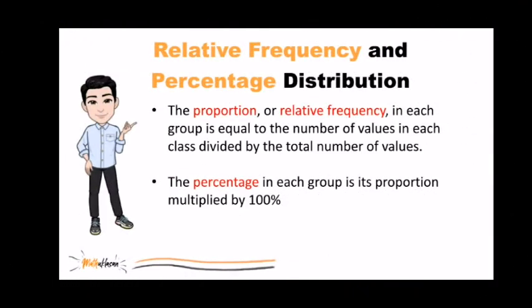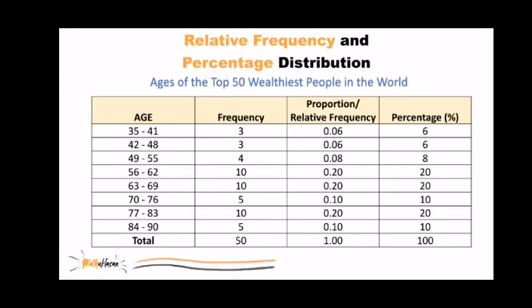Aside from frequency distribution, we could also construct relative frequency and percentage distribution. Here, the proportion or relative frequency in each group is equal to the number of values in each class divided by the total number of values, while the percentage is the proportion multiplied by 100%. Let us use the previous example.